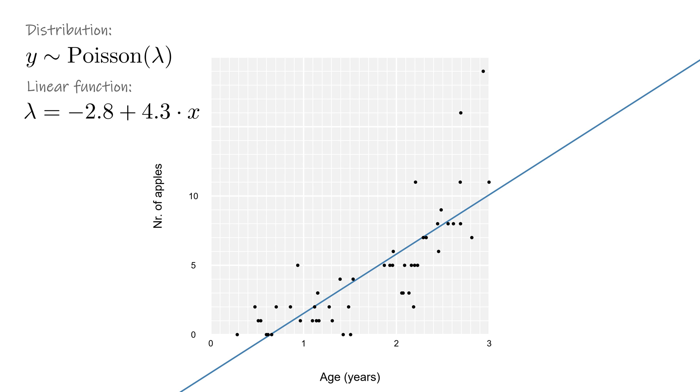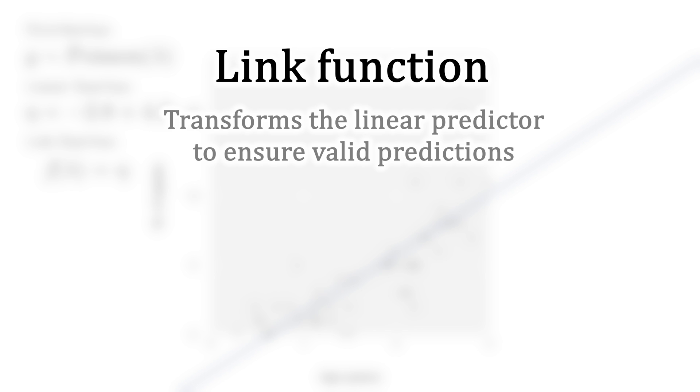We need something to restrict the predictions made by this linear function to only valid outcomes. This is the purpose of the final part that makes up a GLM, the link function. The link function transforms the linear predictor so that it will always output a valid value. For the rate lambda, that means we need a transformation that will ensure the outcome is never negative.